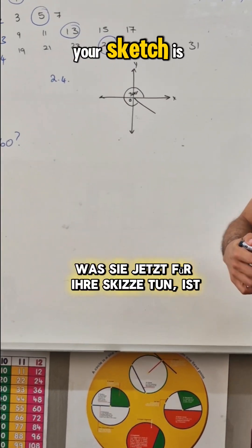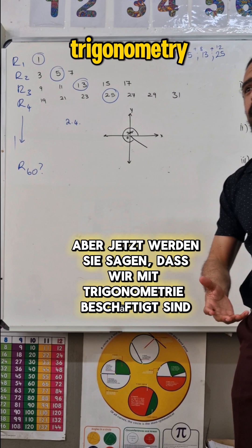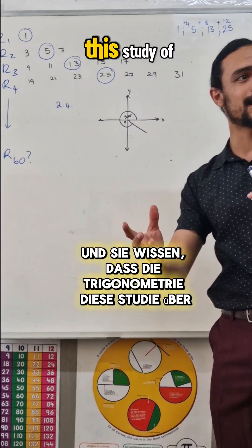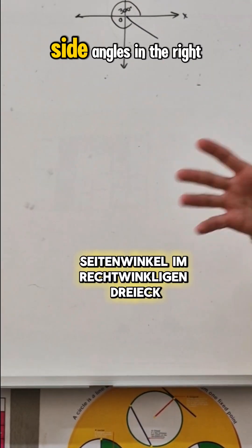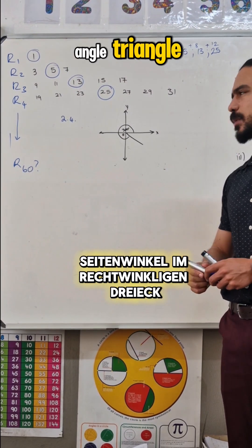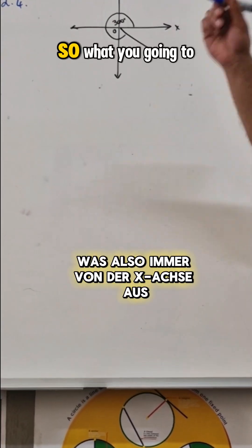So what you do now is, you're going to say, but we're busy with trigonometry, and you know that trigonometry is the study of sides and angles in the right angle triangle, but now you're going to say, sir, there's no right angle triangle.